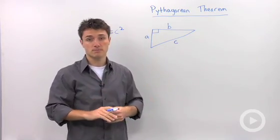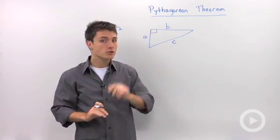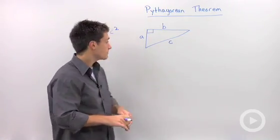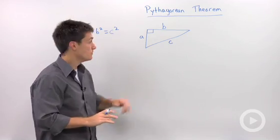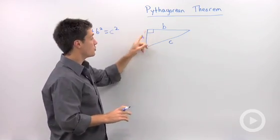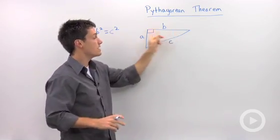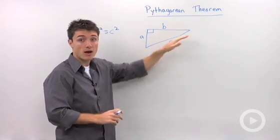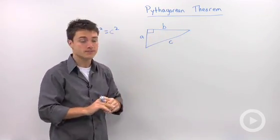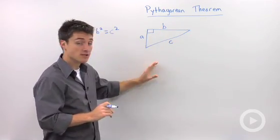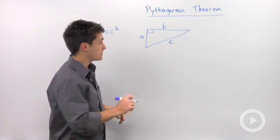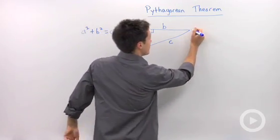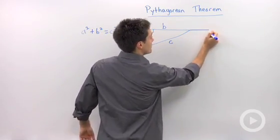I'm going to show you just one proof here. It starts with a triangle where we have two legs, a and b, and a hypotenuse c. What I'm going to do is draw in four more triangles.